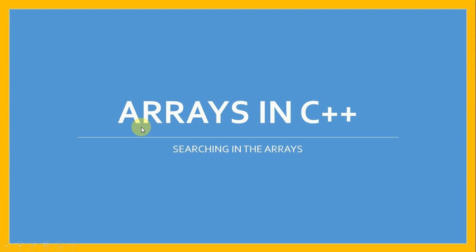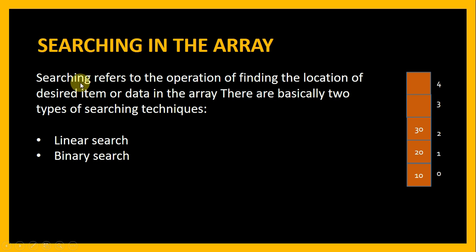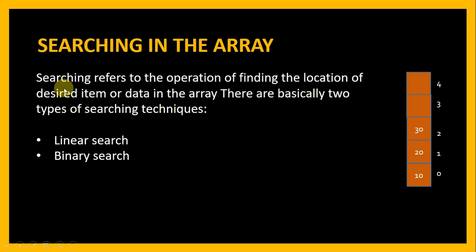Greetings everyone. In this video tutorial we will talk about arrays in C++ and especially searching in arrays. Searching refers to the operation of finding the location of a desired item or data in the array. So if an array is given to us and we just want to find out whether an item is present in the array or not, we perform the search operation. There are basically two types of searching techniques: linear search and binary search.